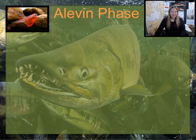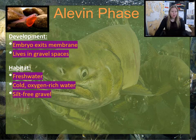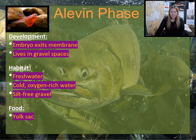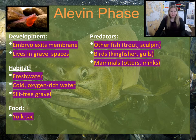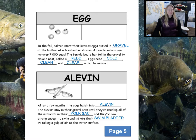As alevin, salmon exit their egg membrane and live in the spaces between the gravel. They live in fresh water and it needs to be cold and oxygen rich, still free of silt since the alevin are living in those spaces between the rocks. They don't need food yet because their yolk sac is still feeding them — you can see the yolk sac still attached to their belly. They face the same predators as eggs: trout, kingfishers, and otters, and the same threats: temperature change, gravel disturbance, pollution, and dirt in the water. They'll be alevin for another 30 to 60 days.